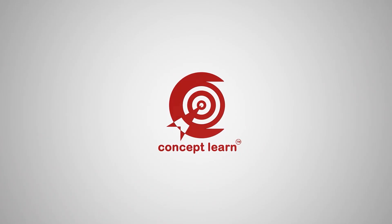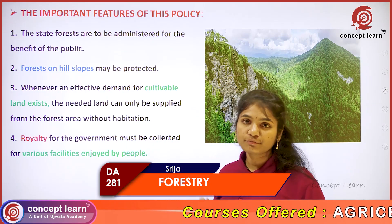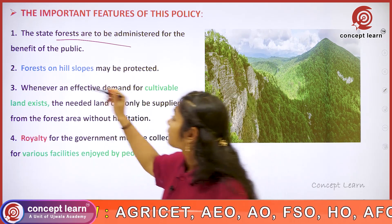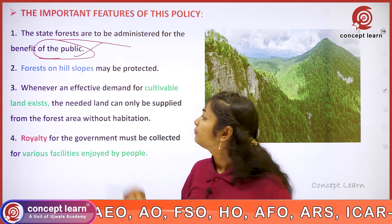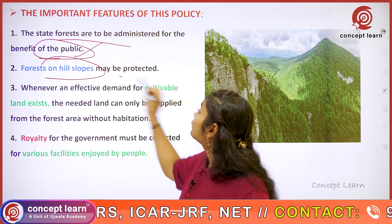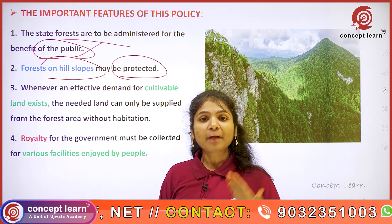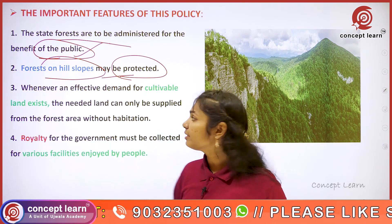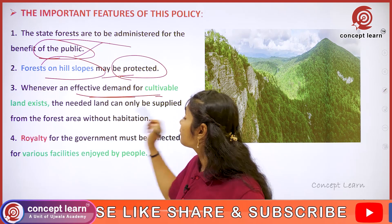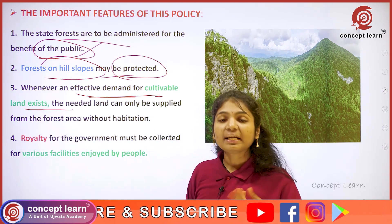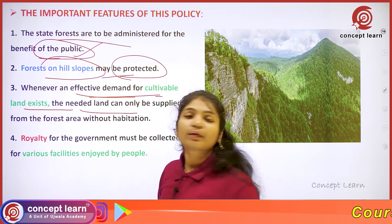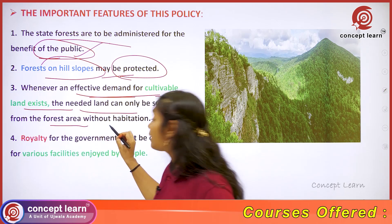Welcome to Concept Learn. Important features of the First Forest Policy: the first is that state forests are to be administered for the benefit of the public. The second is that forests on hill slopes means that there is a lot of land that may be protected. The third is that whenever an effective demand for cultivable land exists, the needed land can only be supplied from the forest area without habitation.